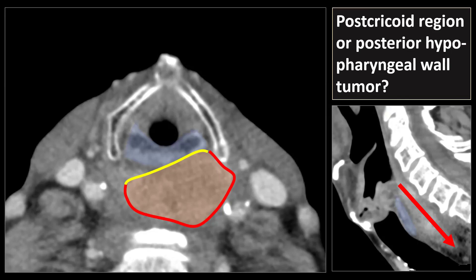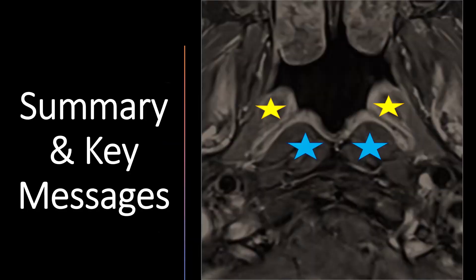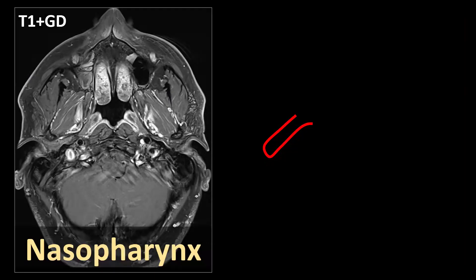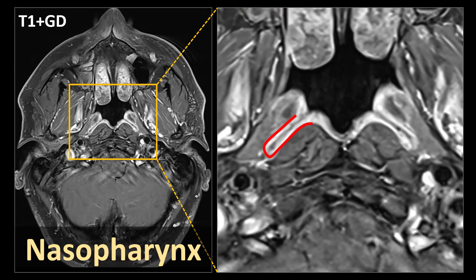This concludes the presentations on pharyngeal anatomy. As a summary: when looking at the nasopharynx, you should be able to quickly recognize all the important structures — the torus tubarius, the impressions caused by the longus capiti or colli muscles, and Rosenmuller's fossa located posteriorly of the torus tubarius, which is the predilection site for nasopharyngeal carcinomas.